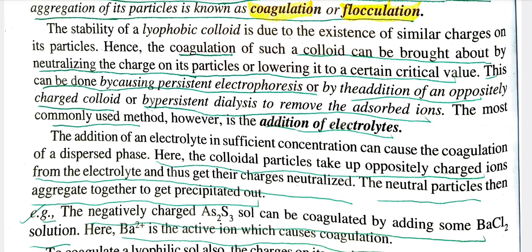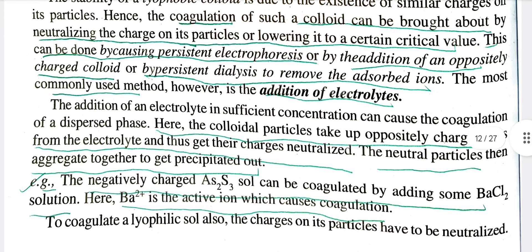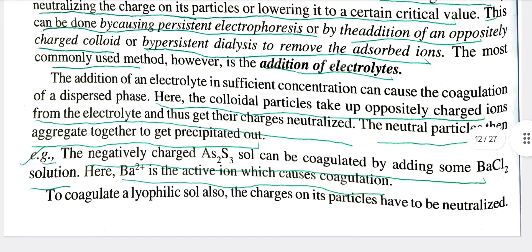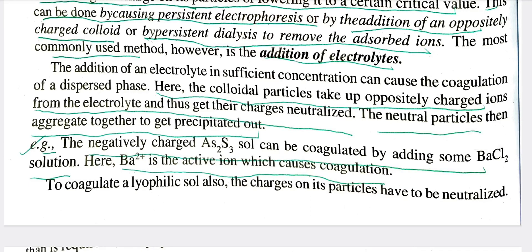The most common method of coagulation is the addition of electrolytes. The colloidal particle takes up oppositely charged ions from the electrolyte and thus gets its charge neutralized. The neutral particles then aggregate together and get precipitated out.